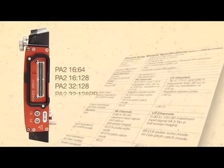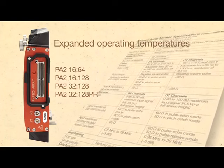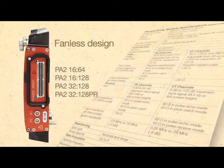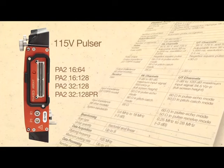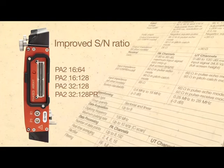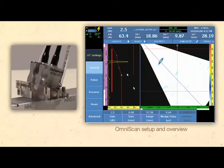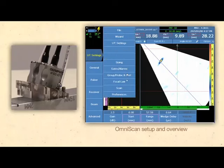Improvements in latest generation PA2 OmniScan modules include expanded operating temperatures, fanless design, 115-volt pulsar, video filtering, and significantly improved signal-to-noise ratio required for austenitic inspections. Standard OmniScan software supports DMA probes and requires a law file import.